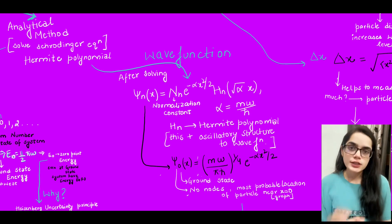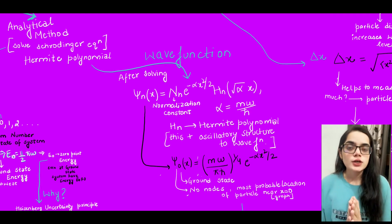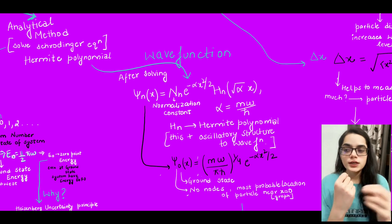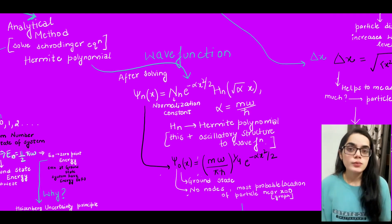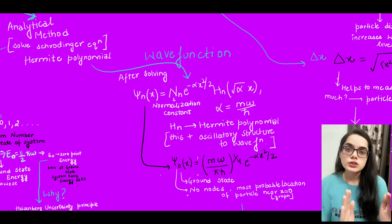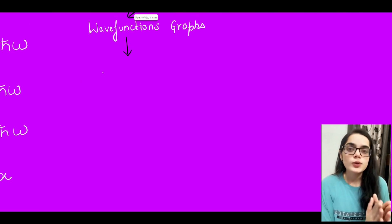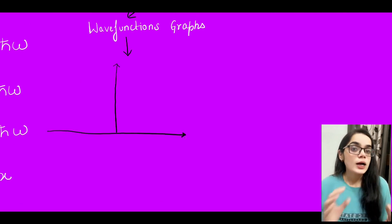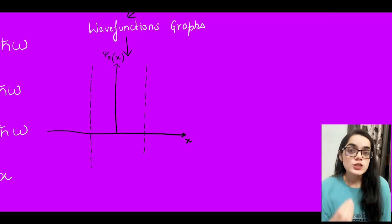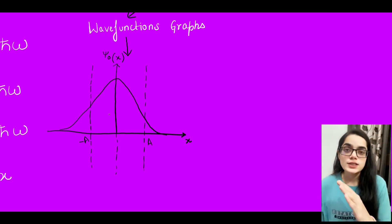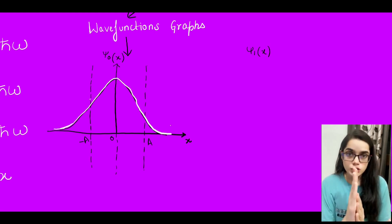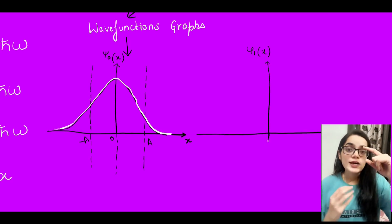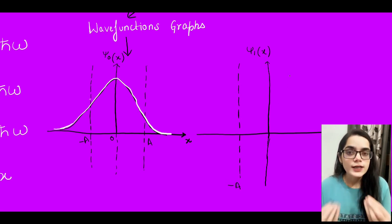The ground state wave function ψ₀ is a Gaussian function — you can identify it by the form with a constant times e^(−αx²/2), which means it has no nodes. Nodes are points at which there is zero probability of finding the particle; at a node, the particle cannot be found. Because ψ₀ is a Gaussian function, the maximum probability of the particle is at x = 0 — the midpoint where the function has its highest peak — meaning the chances of finding the particle there are the greatest.